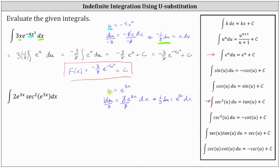We can now substitute u for e to the 3x, and also substitute 1/3 du for e to the 3x dx, factoring out the 2. This gives us 2 times the integral, where e to the power of 3x times dx is 1/3 du. We factor out the 1/3, giving us du, and secant squared of e to the power of 3x becomes secant squared u.